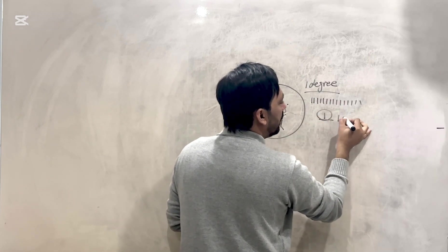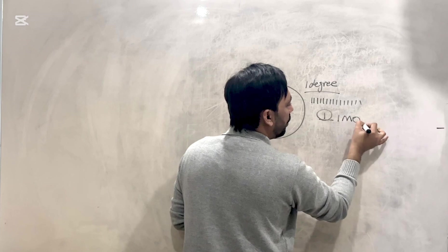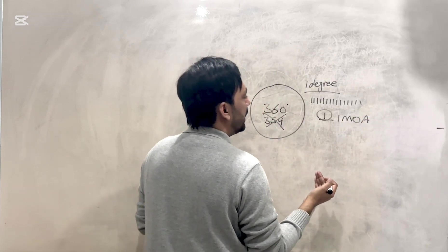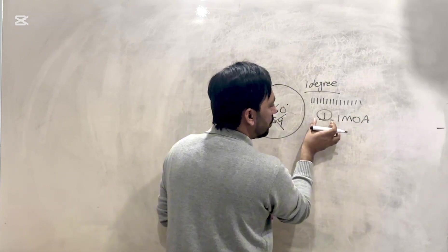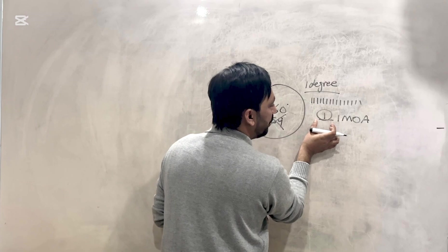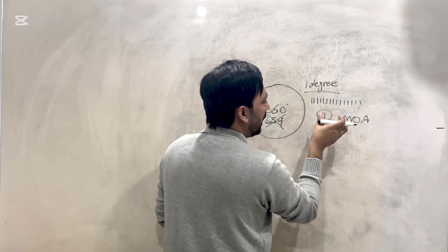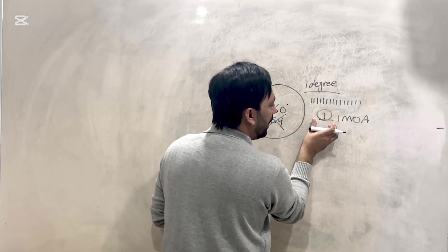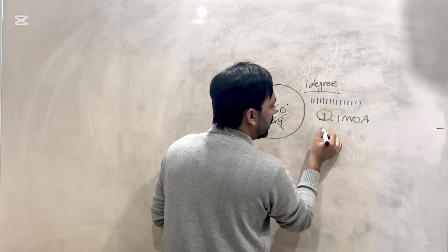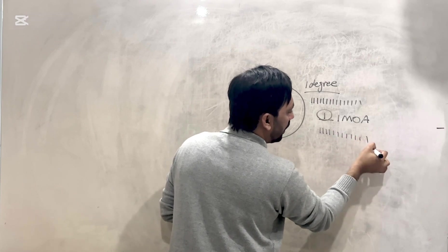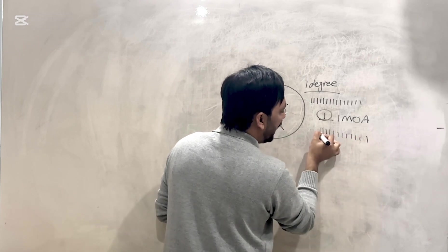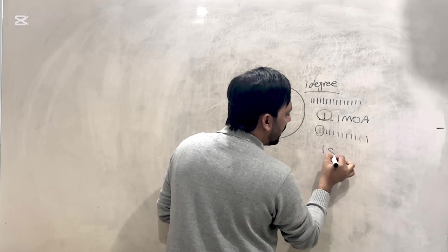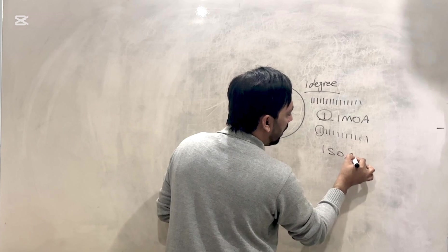This one part is called one minute of arc. There is another concept: one second of arc. I take this one minute of arc and divide it further into 60 more parts, and pick one out of these 60. That is called one second of arc.